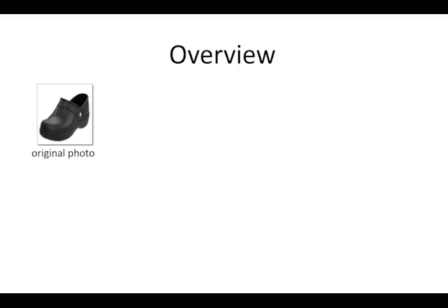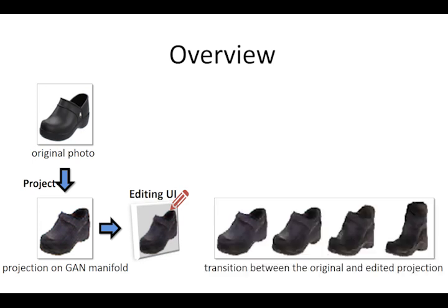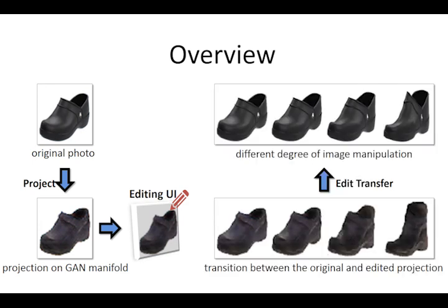Here is an overview of our system. We first project the original photo onto a low-dimensional latent representation by regenerating it using GAN. We can use various brush tools to modify the color and shape of the generated image. Finally, we apply the same modifications to the original photo to achieve the final result.